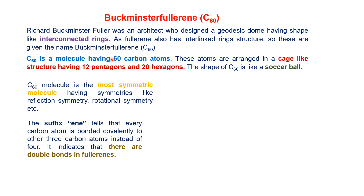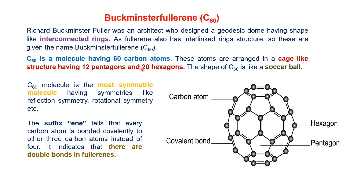C60 is the molecule having 60 carbon atoms. These atoms are arranged in a cage-like structure having 12 pentagons and 20 hexagons. It is a cage-like structure and it looks like a soccer ball. It has 12 pentagons that have 5 corners and 20 hexagons with 6 corners.